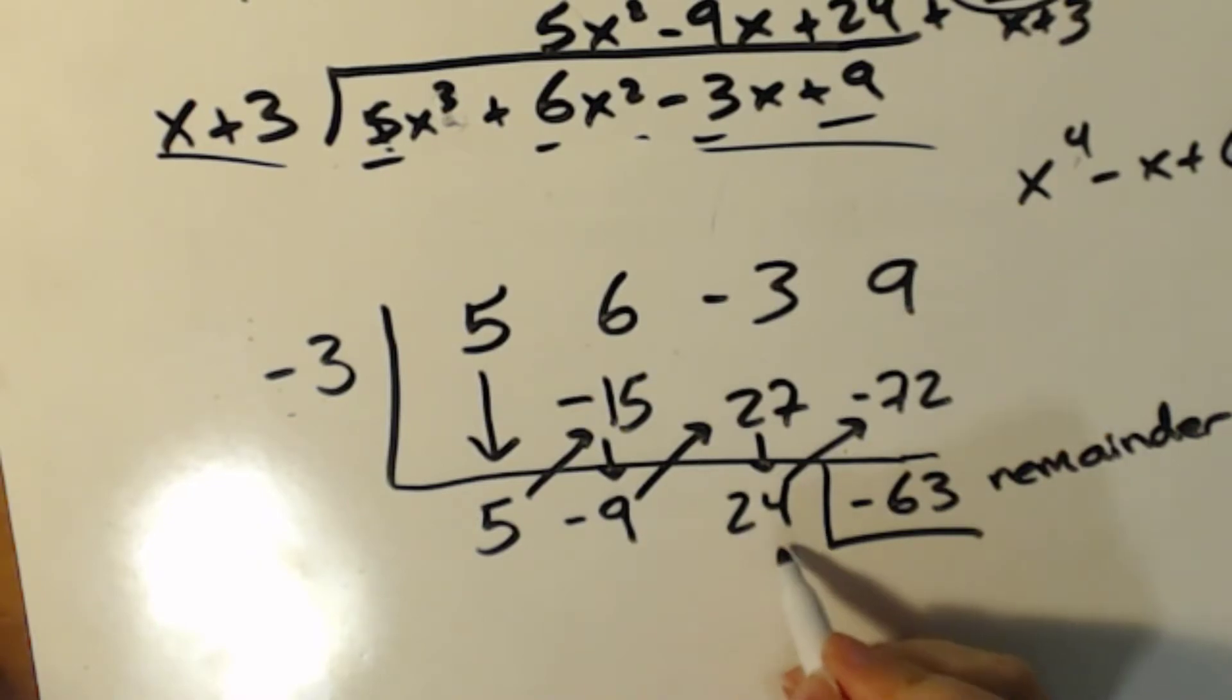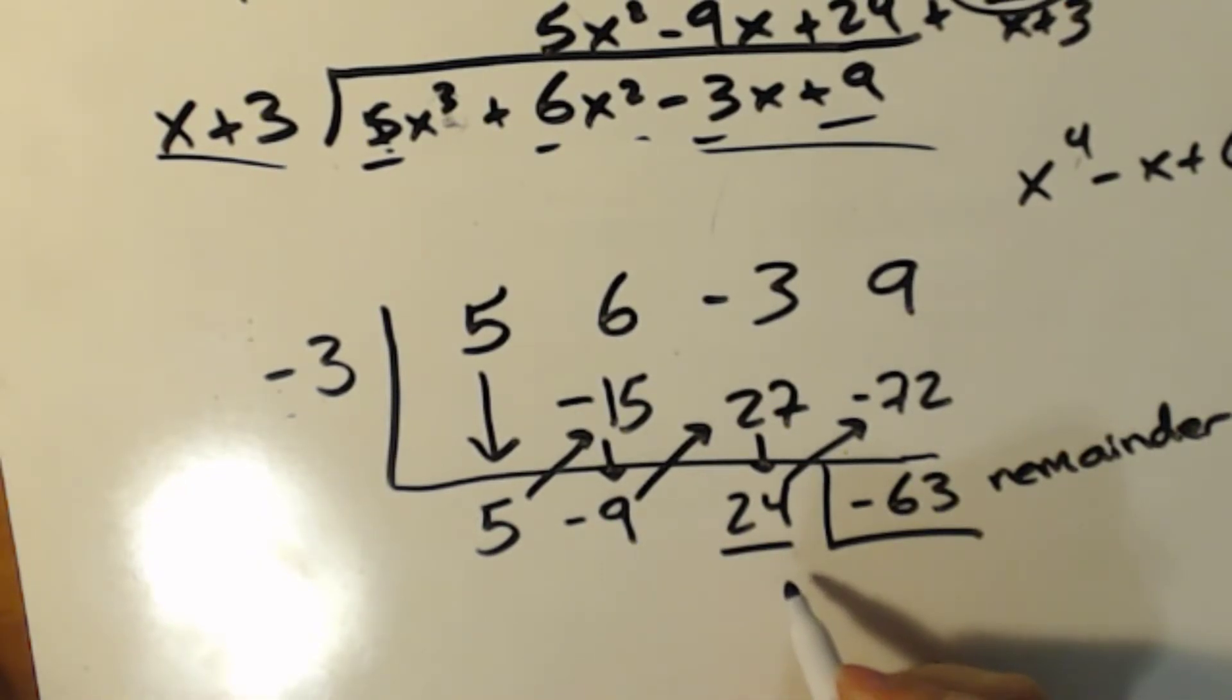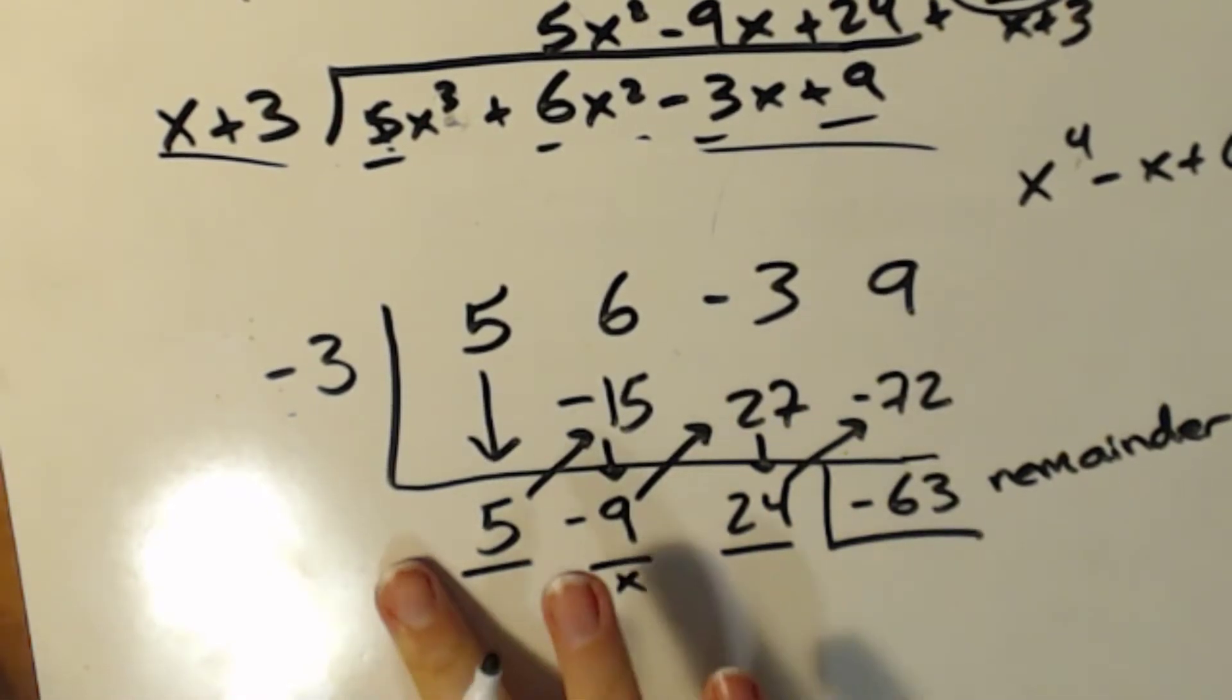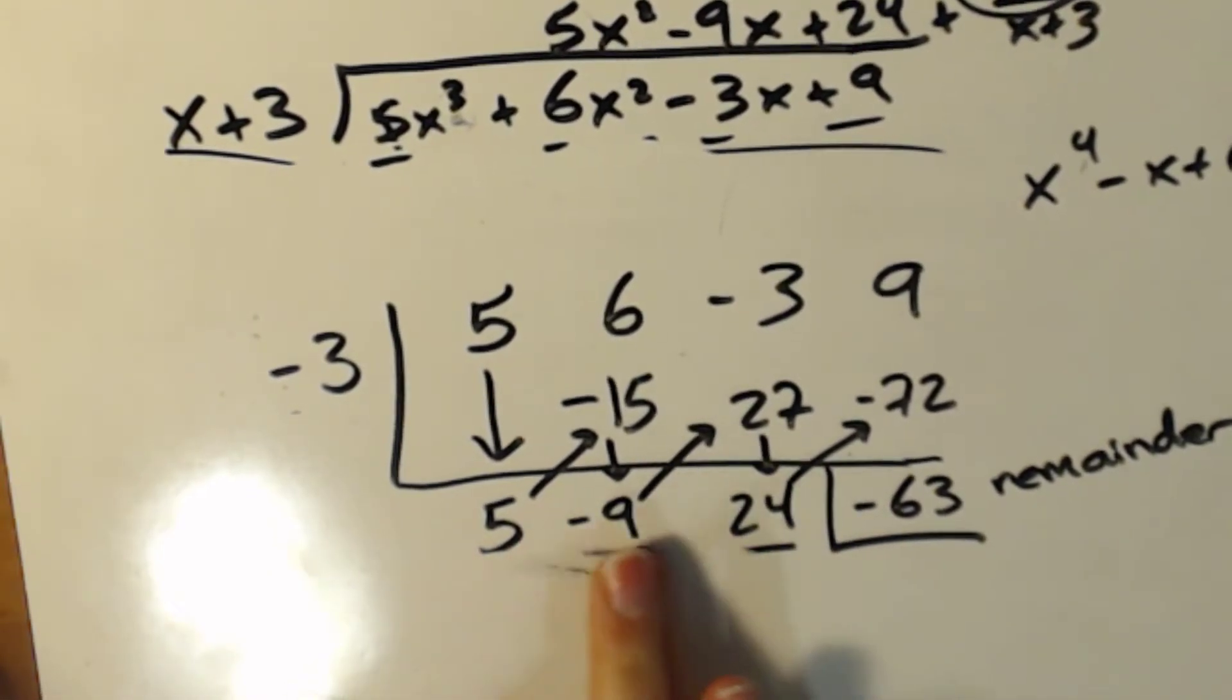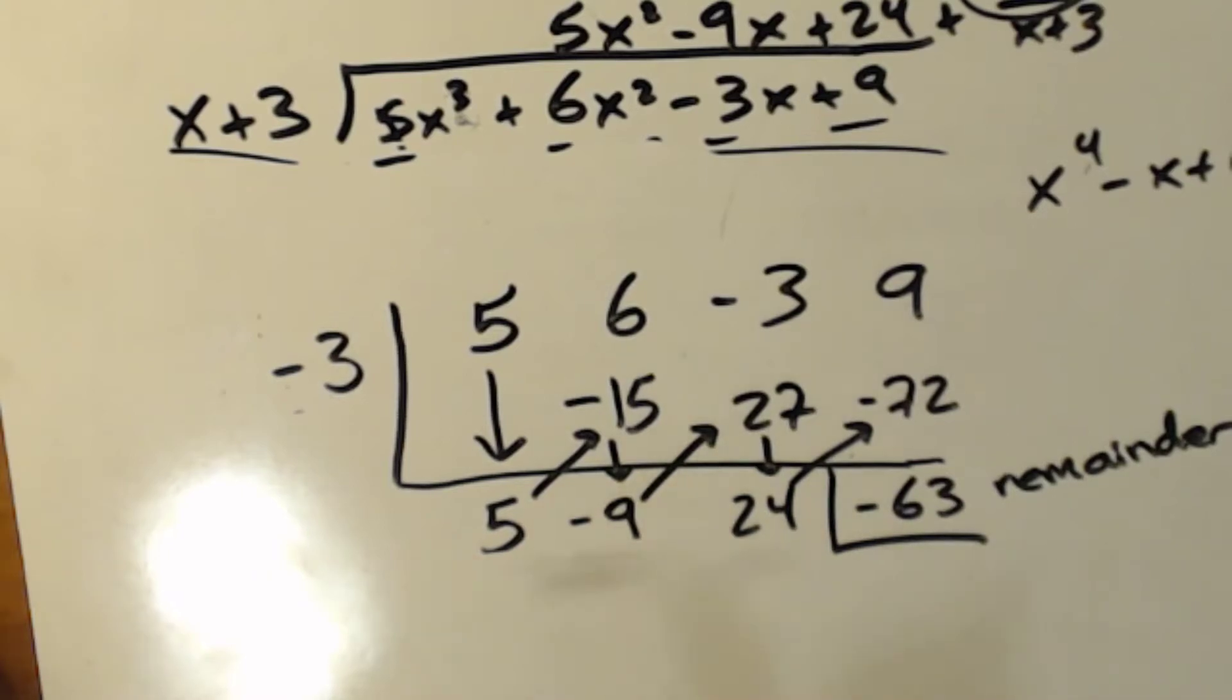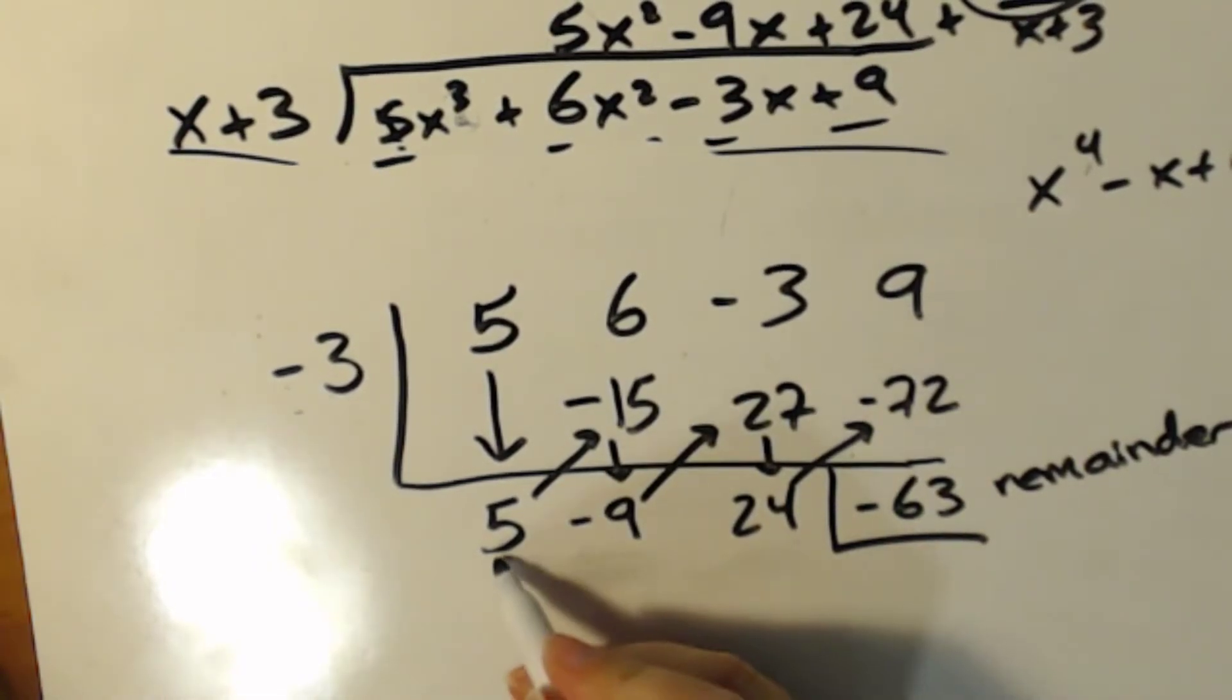So that means that this has to be my constant term, right? This has to be my x term. This looks like a division sign. That's no good. I'm getting rid of those lines. Sorry. I just want to make sure we're not really confused. Constant, x term, x squared term.